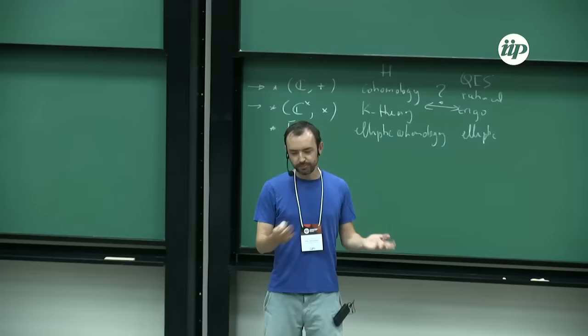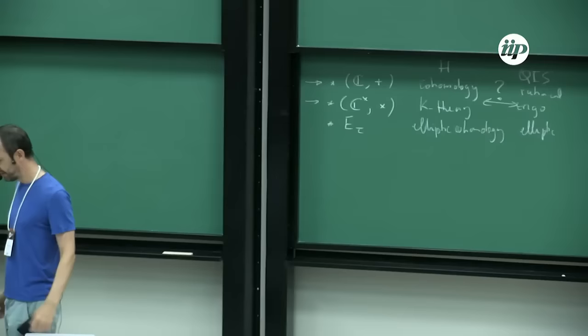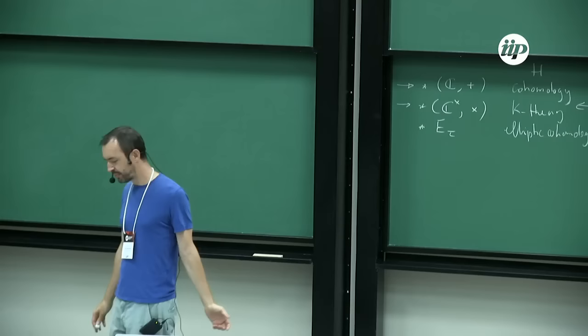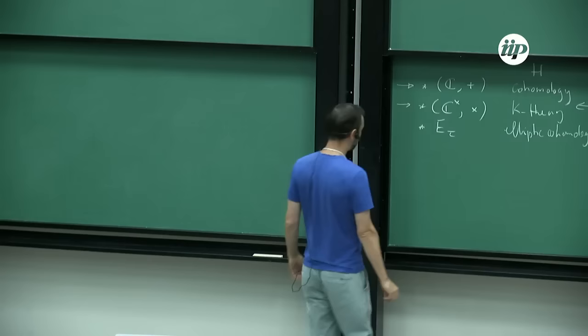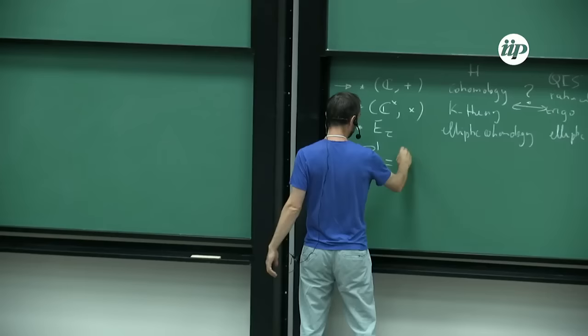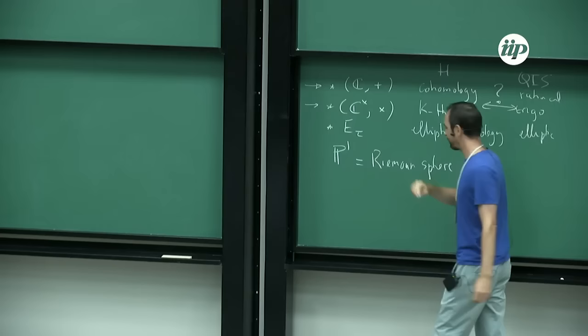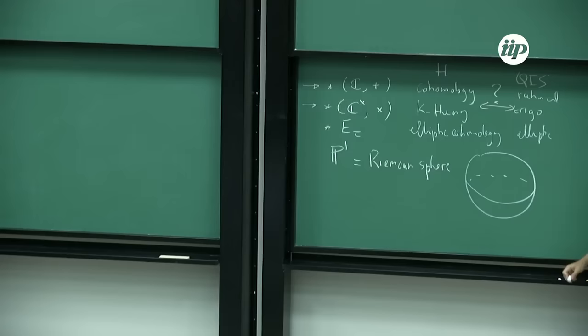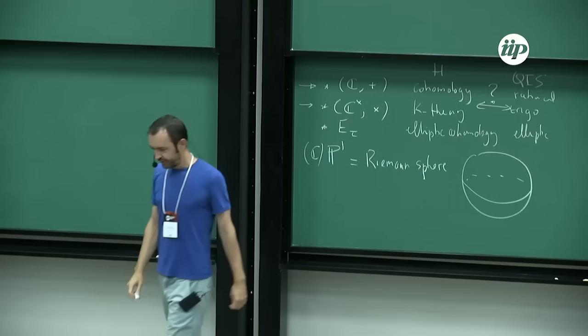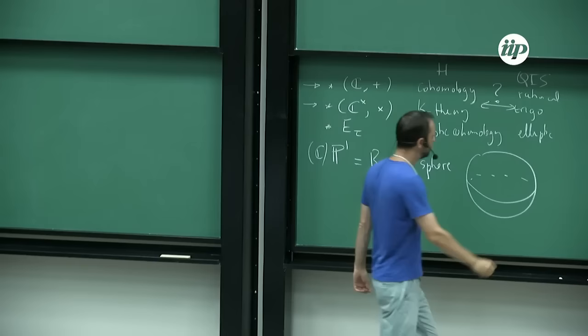So today, roughly — what are these cohomology theories in a geometric setting? It means you have some space, like some variety or manifold, and you associate to it some algebraic data: these cohomologies. The claim is that out of this algebraic data, you're going to build a solution of the Yang-Baxter equation. The goal of today is to explain this in the very simplest setting. We're going to work only with one variety which you all know: P1, the Riemann sphere.